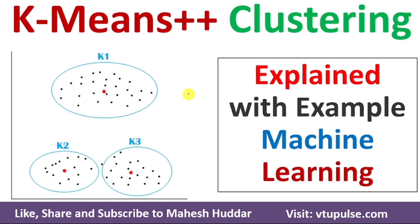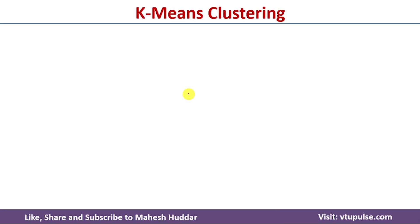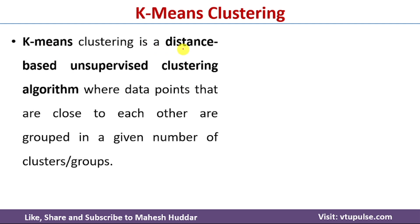Welcome back. In this video I will discuss the k-means plus plus clustering algorithm in machine learning with a simple example. First we will understand what k-means clustering is. K-means clustering is a distance-based unsupervised clustering algorithm where data points that are close to each other are grouped together.